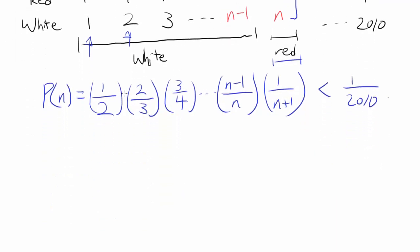Let's simplify this, which simplifies nicely. 2s cancel out, 3s cancel out, 4s cancel out, 5s cancel out, all the way to n-1s canceling out. So you have 1 over n times n+1 is less than 1 over 2010.